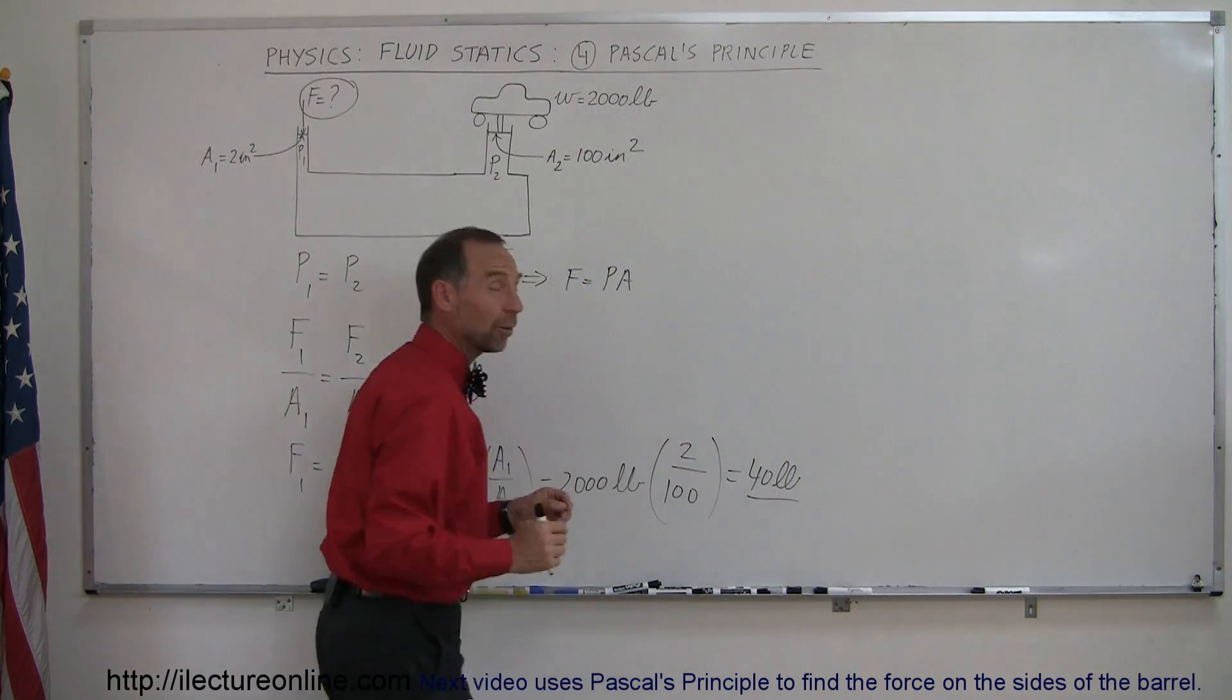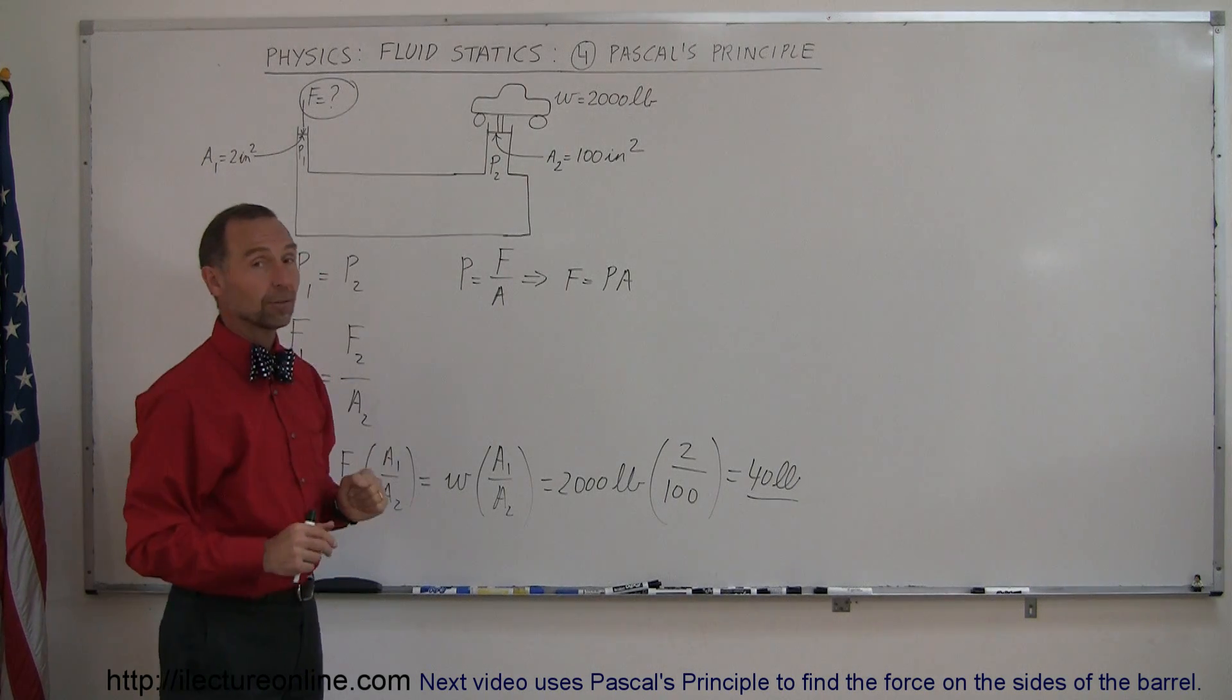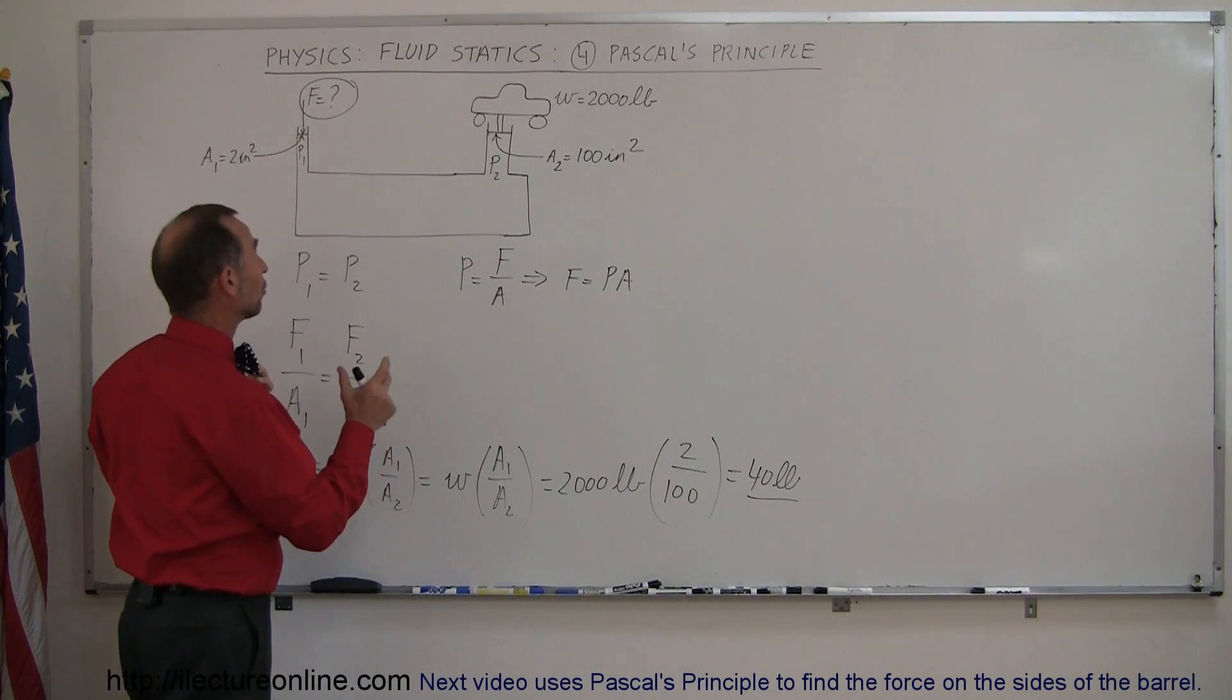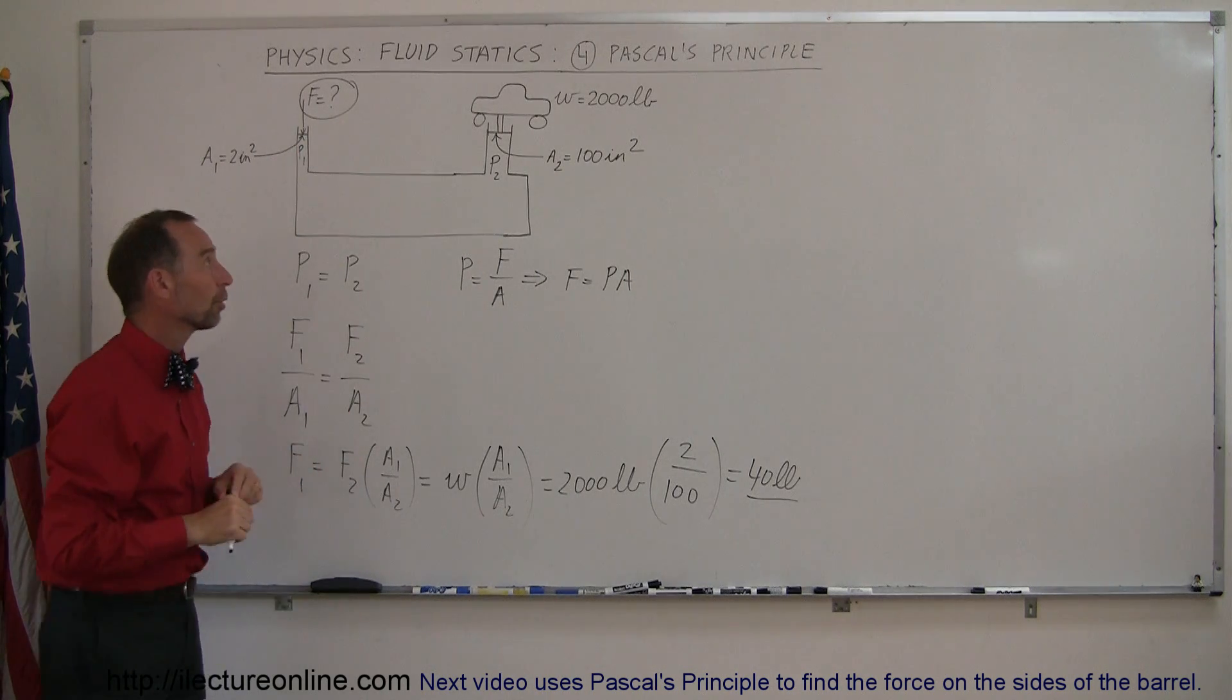So which means that with a very small push of 40 pounds, you can lift up a car that weighs 2,000 pounds, just because of the ratio of the cross-sectional areas of the two pistons on both sides of this tank.